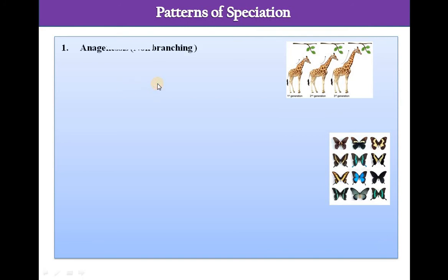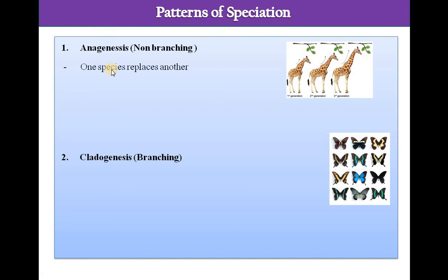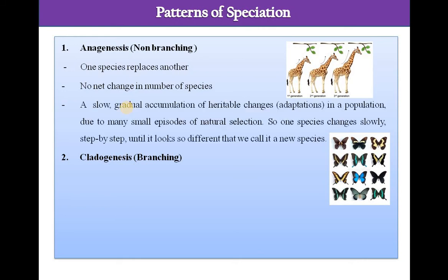What are the patterns of speciation? There are two patterns. Anagenesis is non-branching speciation where one species replaces another with no net change in number of species — one species leads to the formation of one species. A slow, gradual accumulation of heritable changes called adaptations occurs due to many small episodes of natural selection, until the species looks so different that we call it a new species.